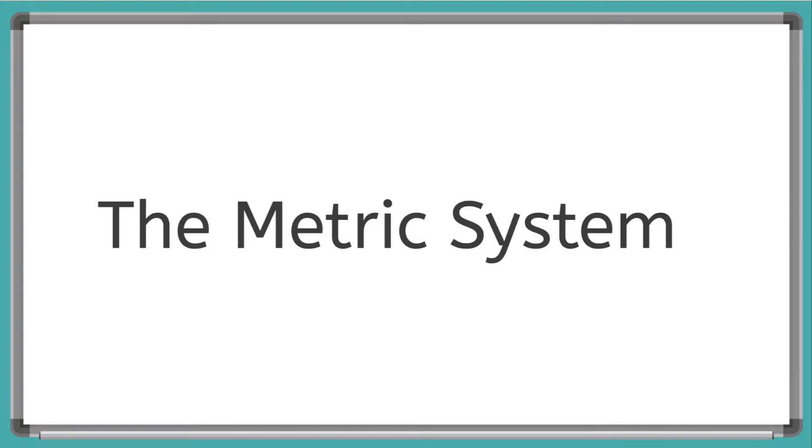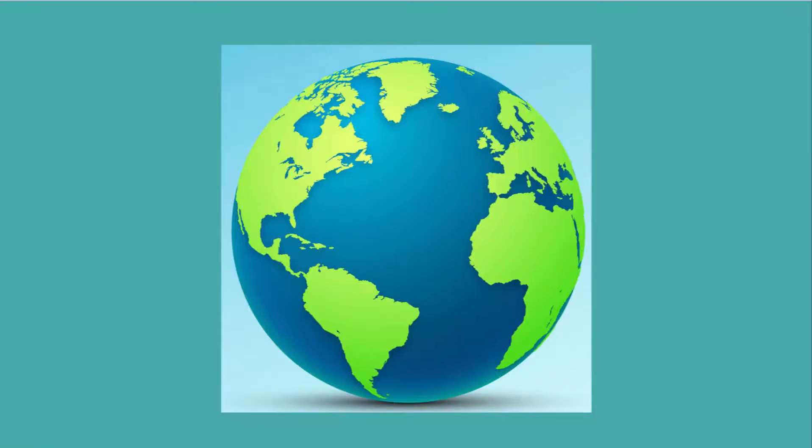In physics and most sciences around the world, we use the same units of measurement, and we call this system the metric system. Sometimes it's called SI units, which means System International Units. We use the metric system so that scientists all around the globe can share their experiments with each other with ease.